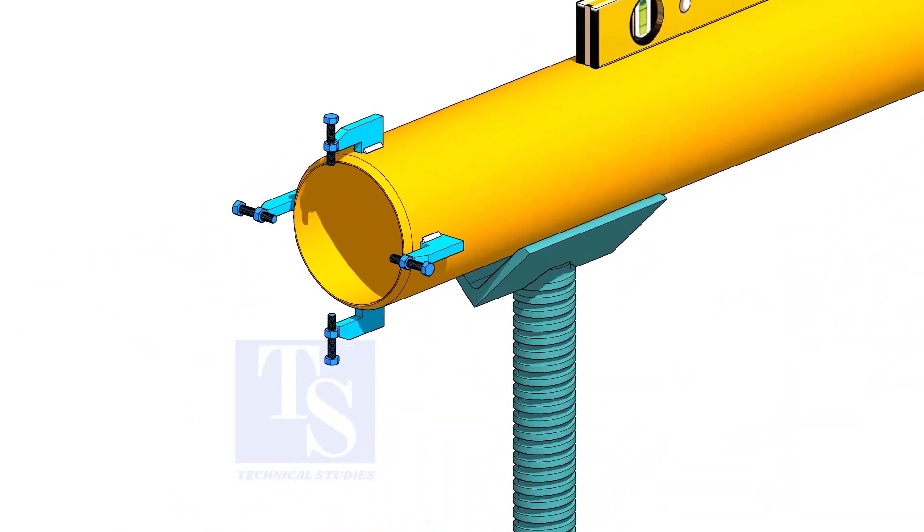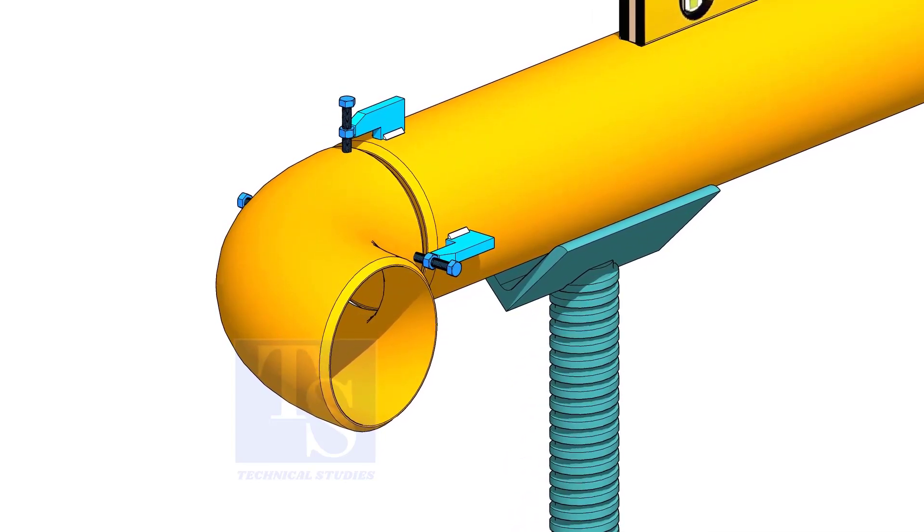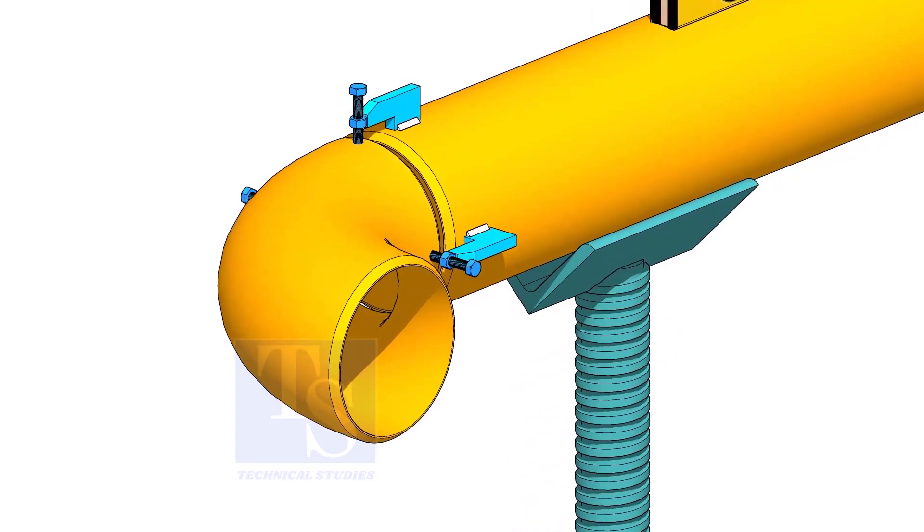Fix the clamps on the pipe. Put the elbow and the gap rod and slightly tighten the clamp bolts.